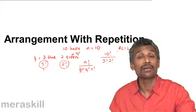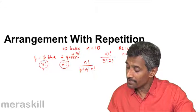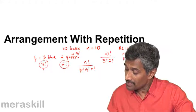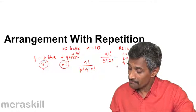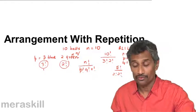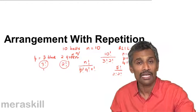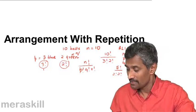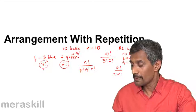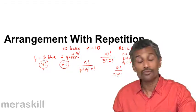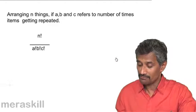For example, take the word ALLILA. Here n = 5. There are 2 A's and 2 L's, so p = 2 and q = 2. The number of arrangements is 5 factorial divided by 2 factorial times 2 factorial. Whether you place the first A first or the last A first, they're identical — both count as one possibility. So the total number of arrangements is 5 factorial divided by 2 factorial times 2 factorial.